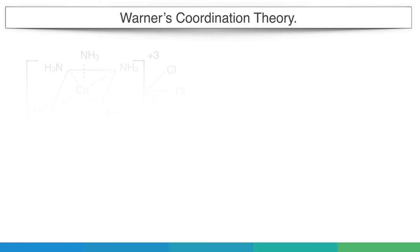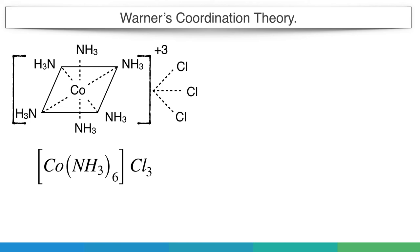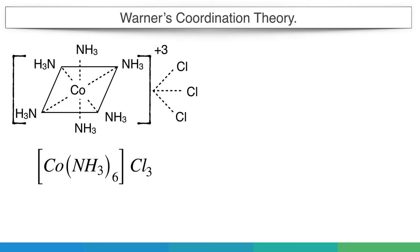On the basis of this theory, Warner suggested the structure of some important complexes. For example, hexaamine cobalt 3 chloride, coordination number of cobalt plus 3 is 6. The 6 ammonia molecules enclosed in square bracket satisfy the secondary valency, while the 3 chloride ions satisfy the primary valency of cobalt ion.